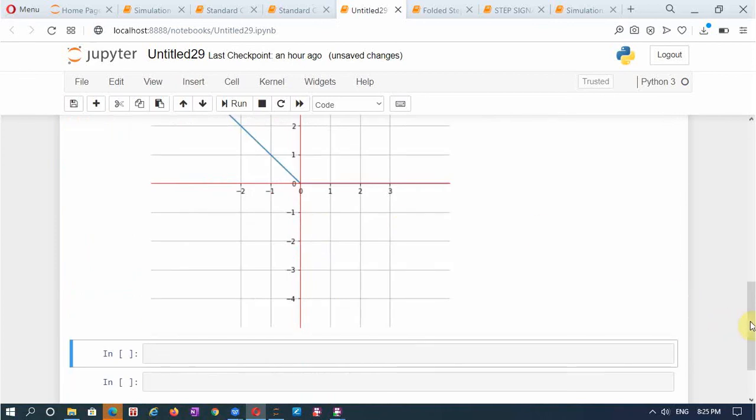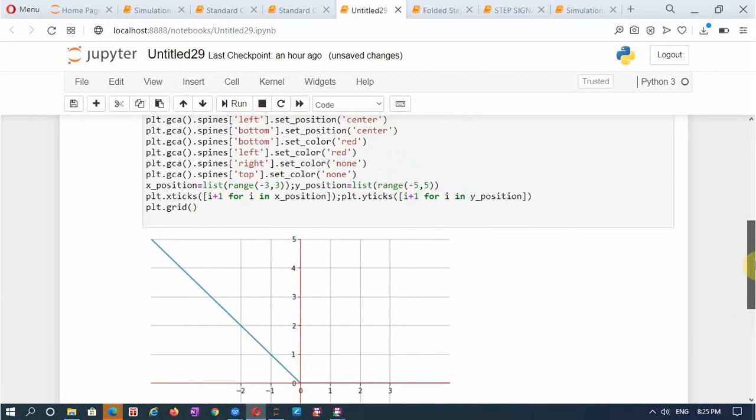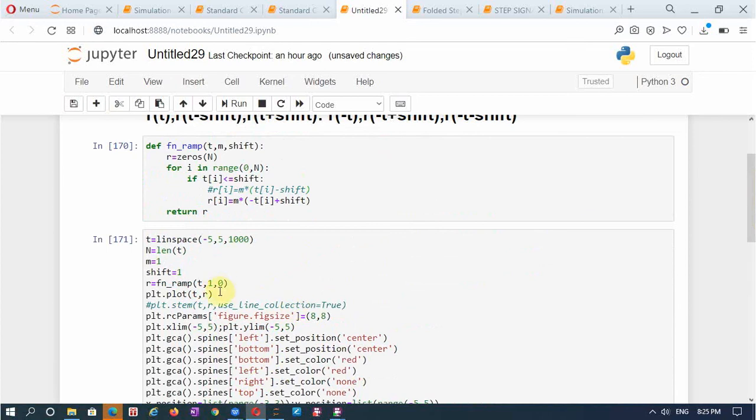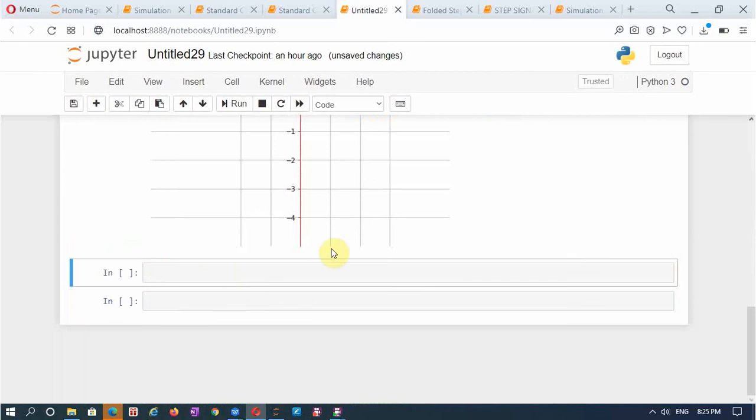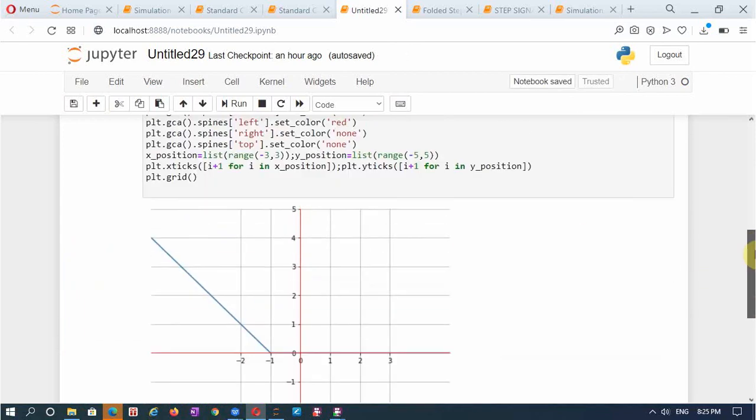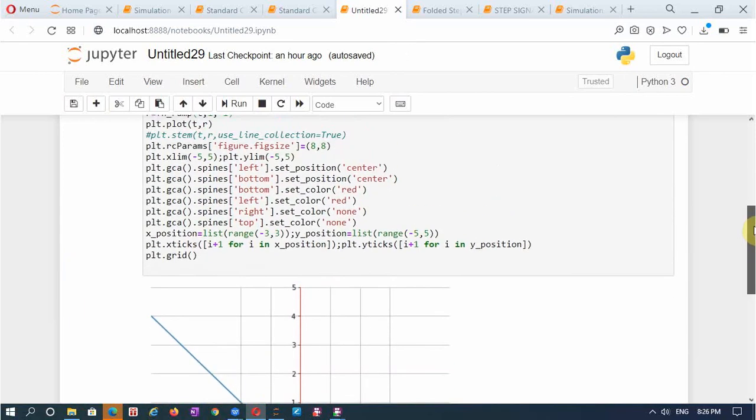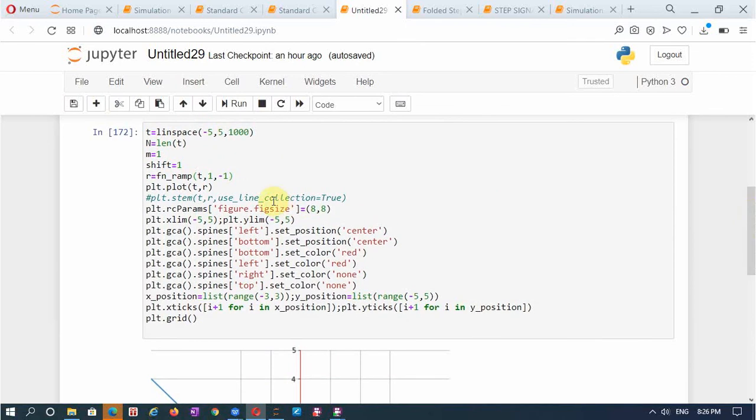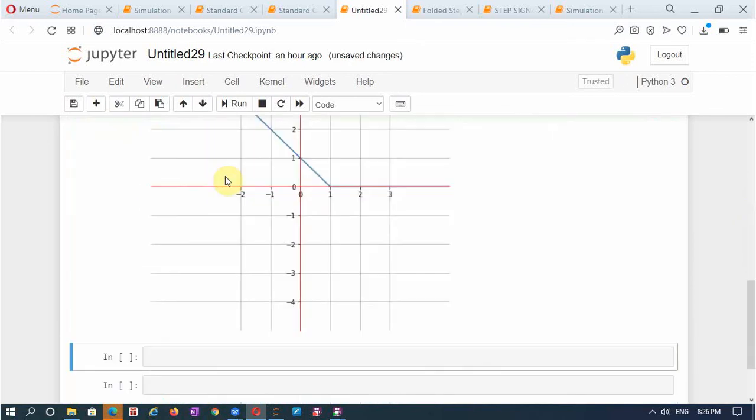Now you see this is the ramp signal which is folded and now I will give the shift. A negative shift shifts to the left, which is opposite to that for the ramp signal, and a positive shift will shift it to the right as shown here.